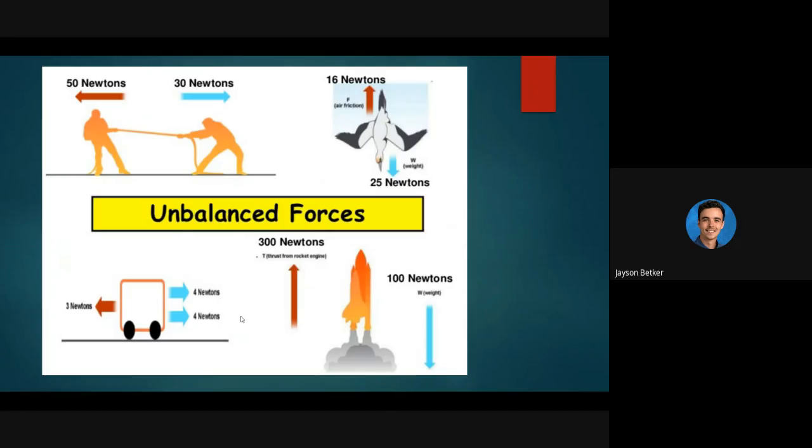So here are some examples of some unbalanced forces. You know imagine you're playing tug of war and your team is pulling with a greater amount of force than the other team. Well that rope and everybody involved inside of that game is going to start moving in the direction of the greater force. This bird, the seagull I think it's a seagull, has got a downwards dive going on of 25 newtons but only 16 newtons of friction opposing it. That means that this bird is going to be accelerating downwards.